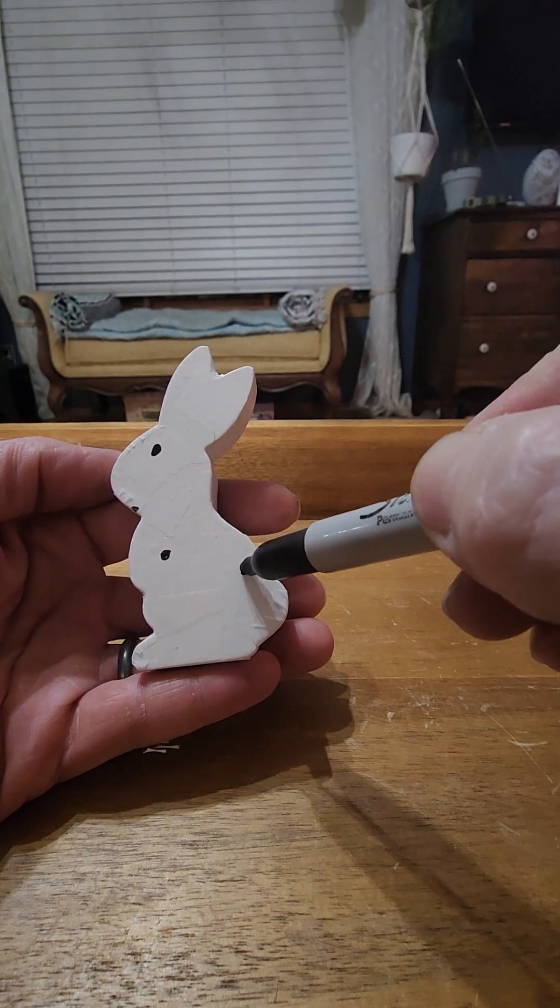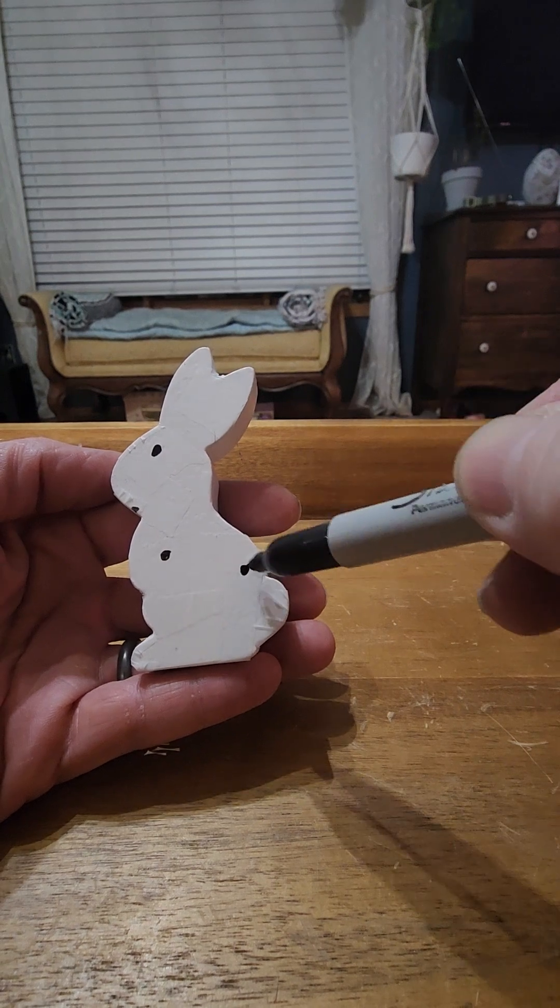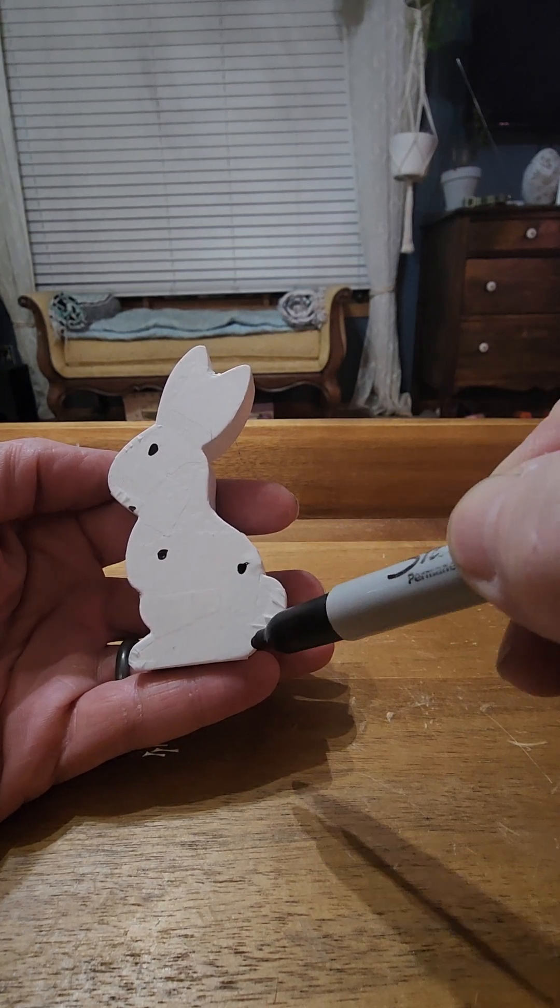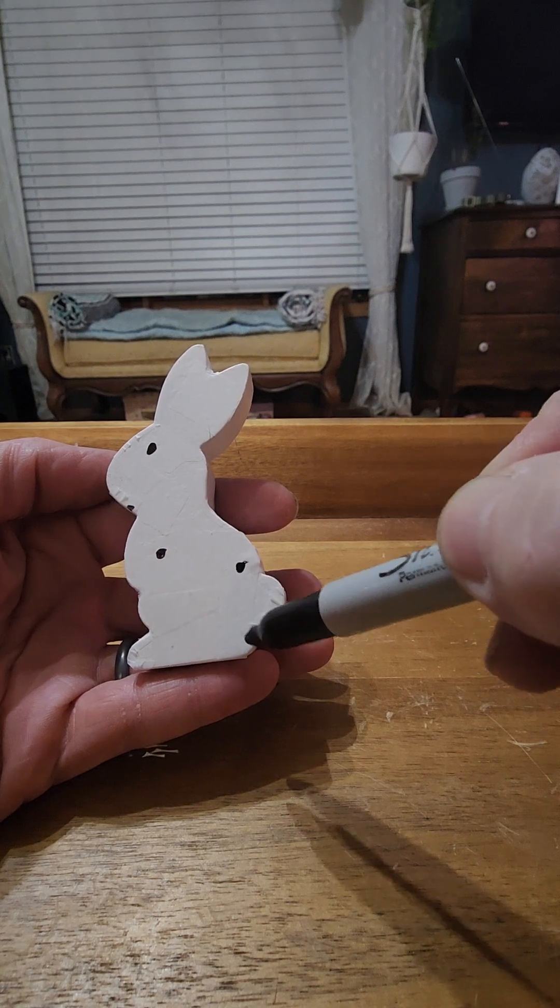But also if you put an eye right there, that's an eye, that could be a nose. With a little mouth right down there.